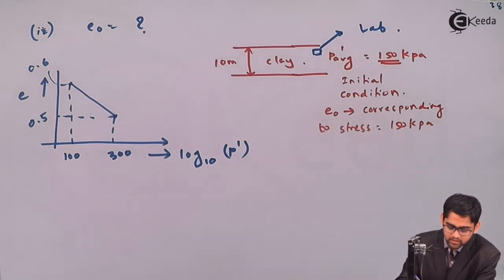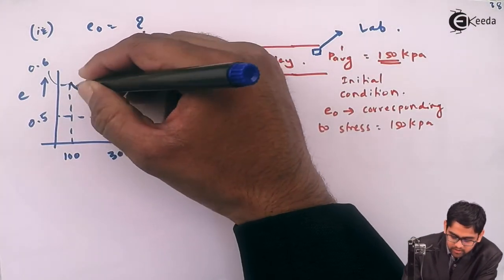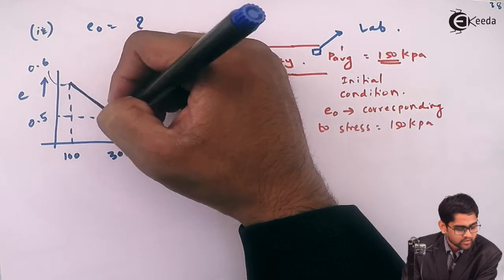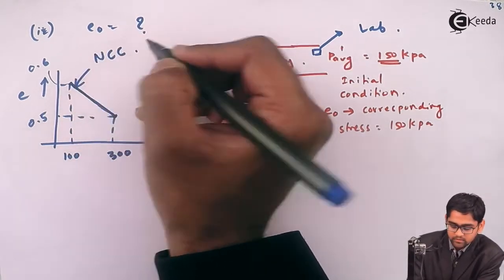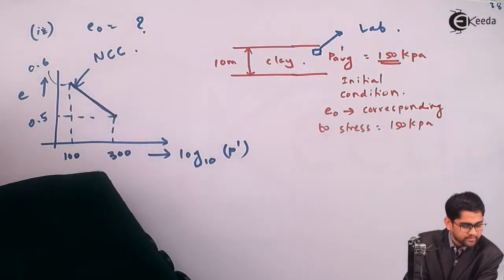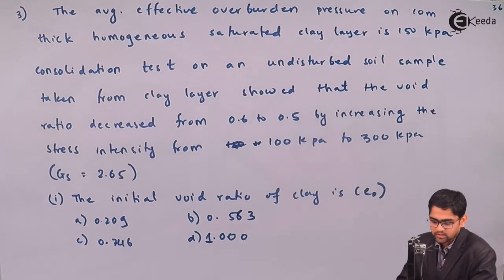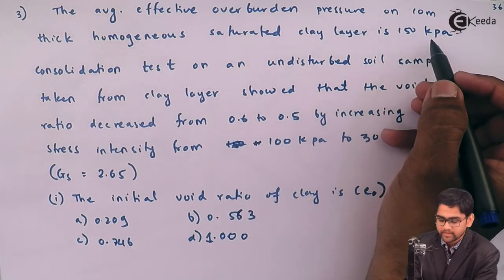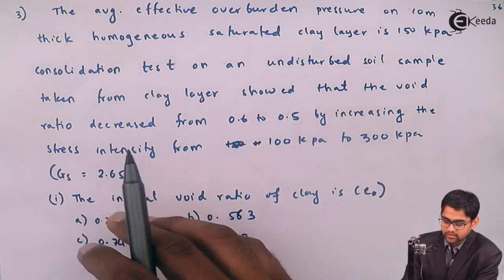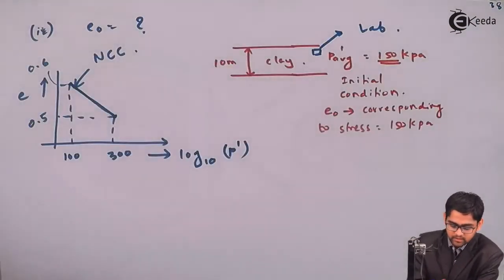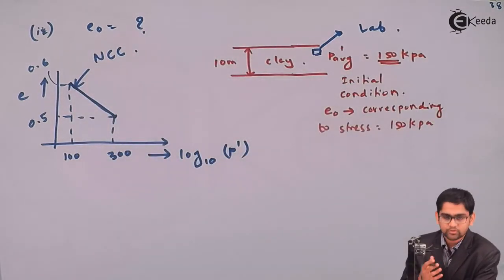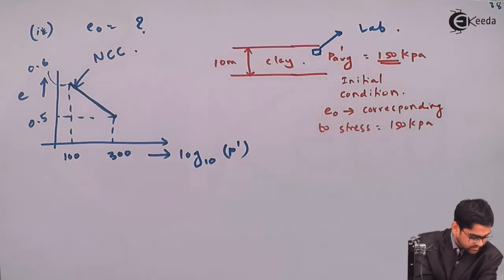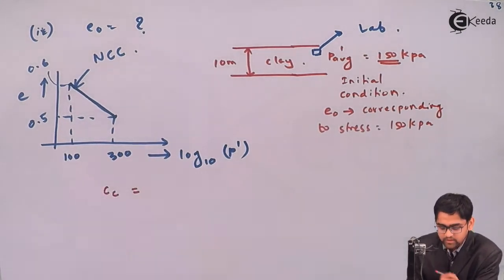This particular line is a straight line — not a curve — because it is for normally consolidated soils. Since the problem does not mention a pre-consolidation stress, and no comment is made about over-consolidation, we consider this a normally consolidated clay. For over-consolidated soils the approach is altogether different. The slope of this straight line is the compression index Cc.